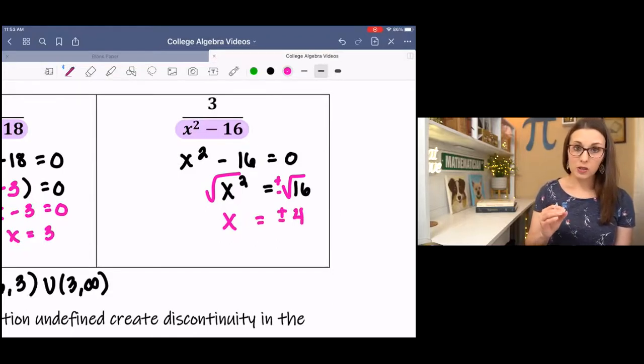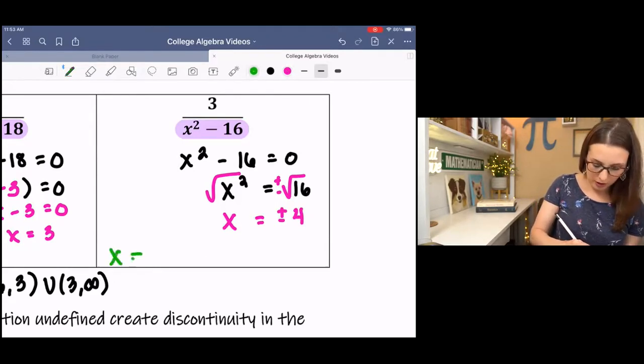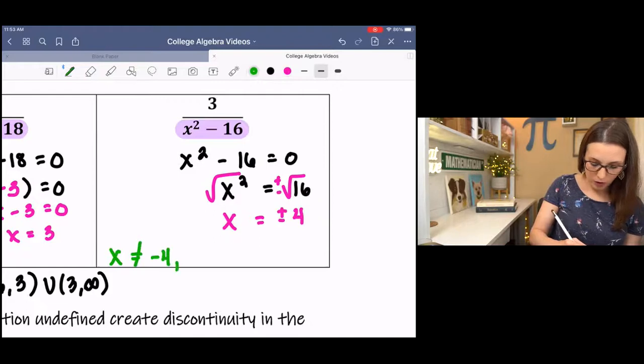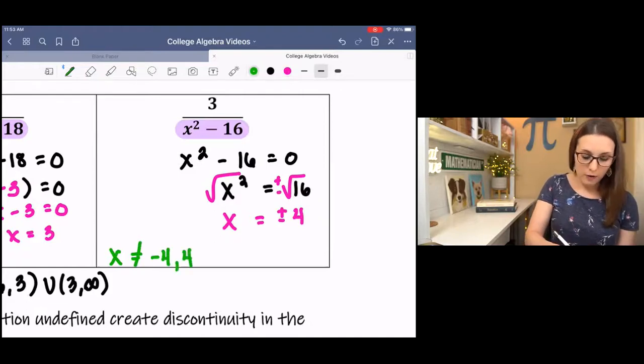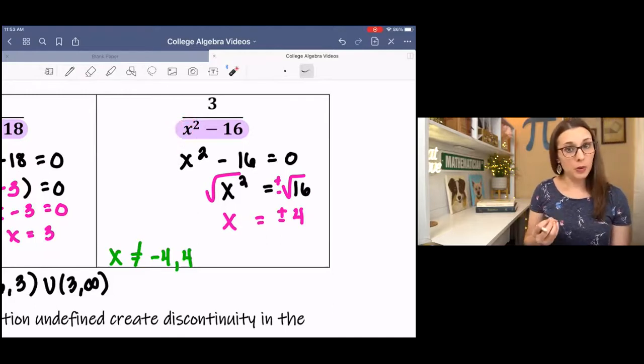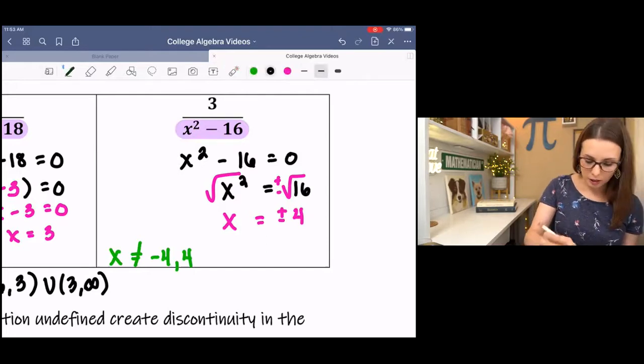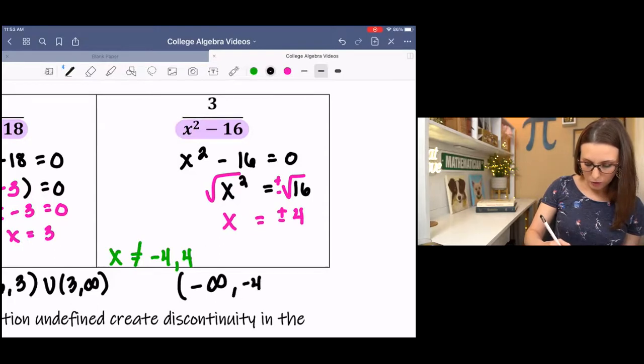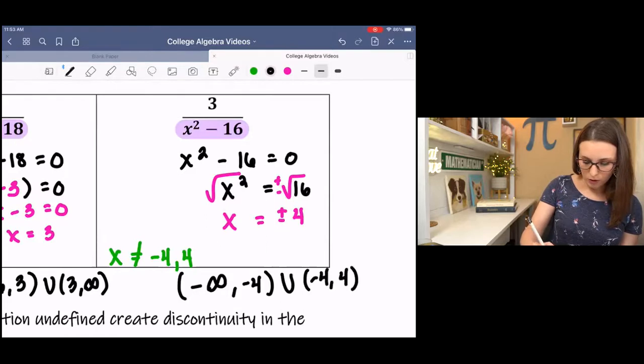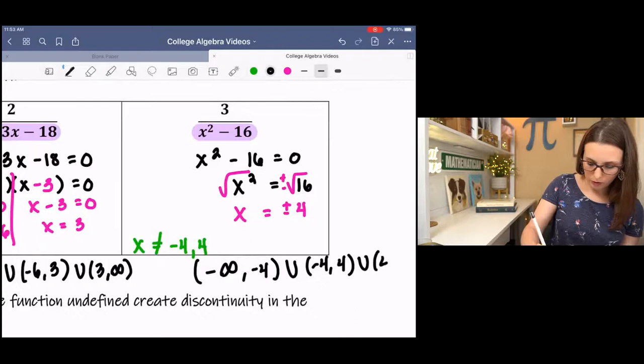So the two places, the two x values that need to be excluded from my domain are negative 4 and positive 4. If I evaluate the function at either of those points, I'm going to get zero in the denominator, which makes the function undefined. If you were to write this in interval notation, we would go negative infinity to negative 4, negative 4 to positive 4, and then 4 to infinity.